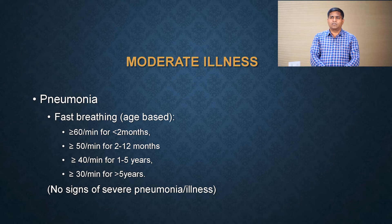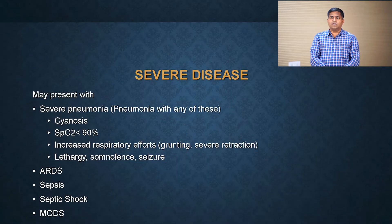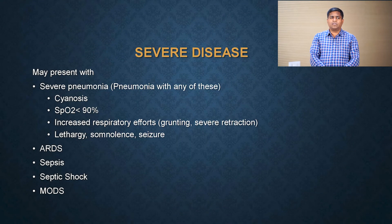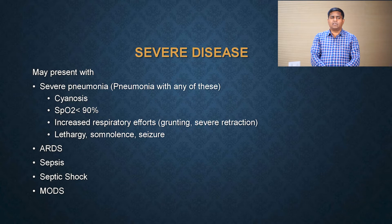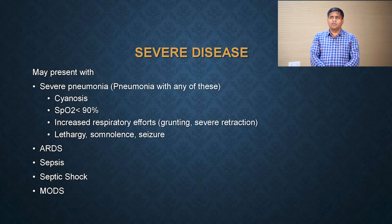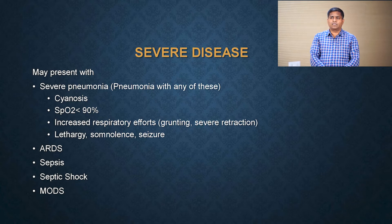The child may present with severe disease, which could be because of severe pneumonia, better defined if there is associated cyanosis, SpO2 level less than 90 percent, increasing respiratory effort in the form of grunting or severe retractions, lethargy, somnolence, or seizure. Or it may present with ARDS, sepsis, septic shock, and MODS.